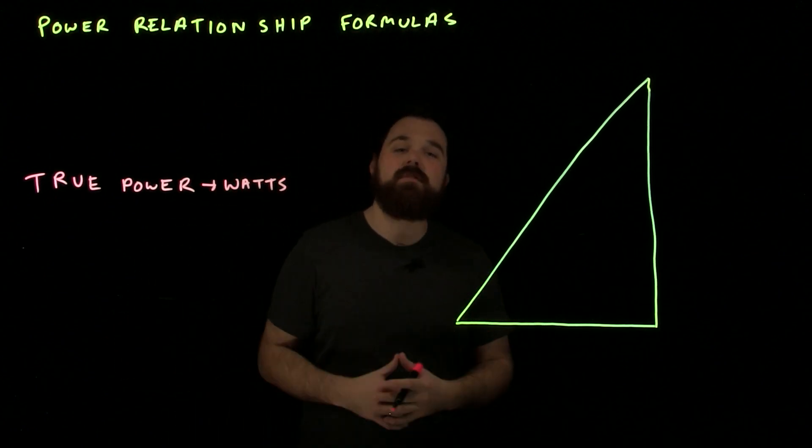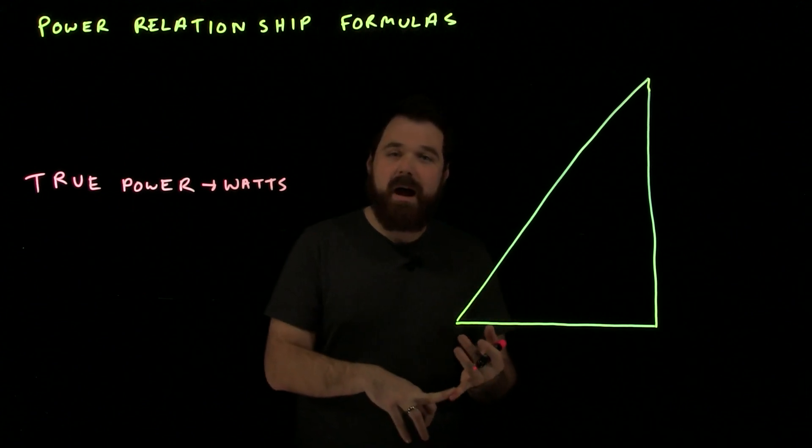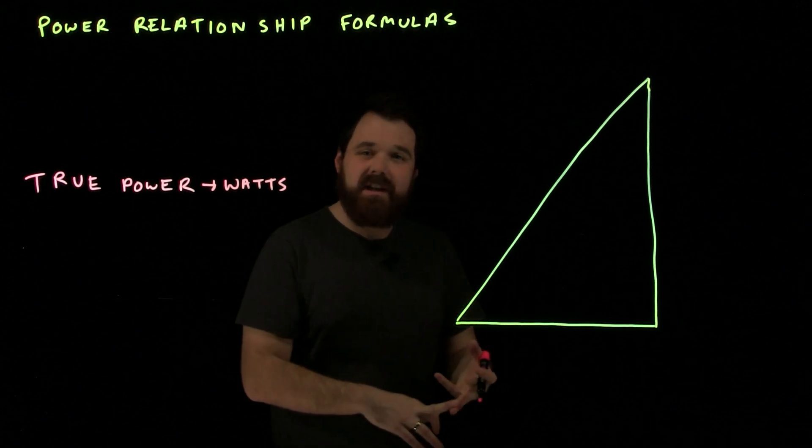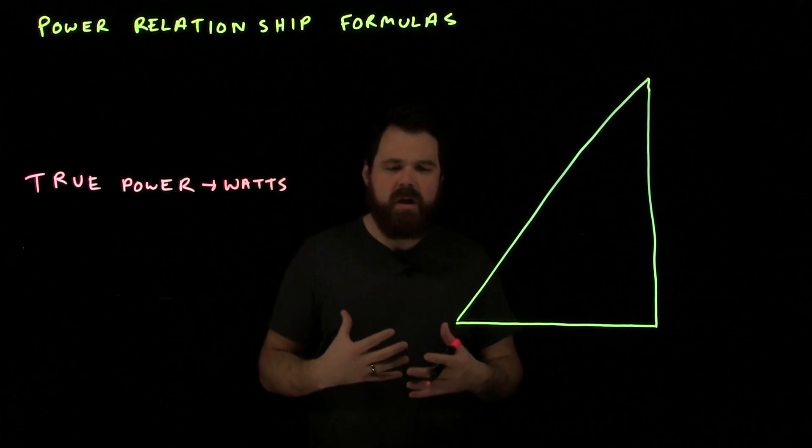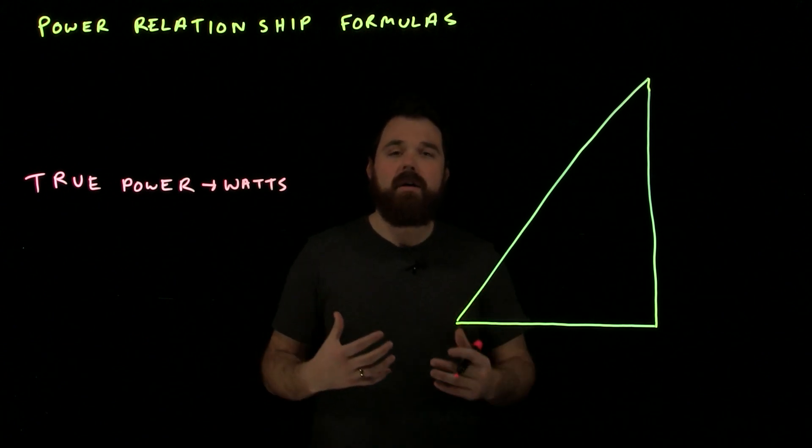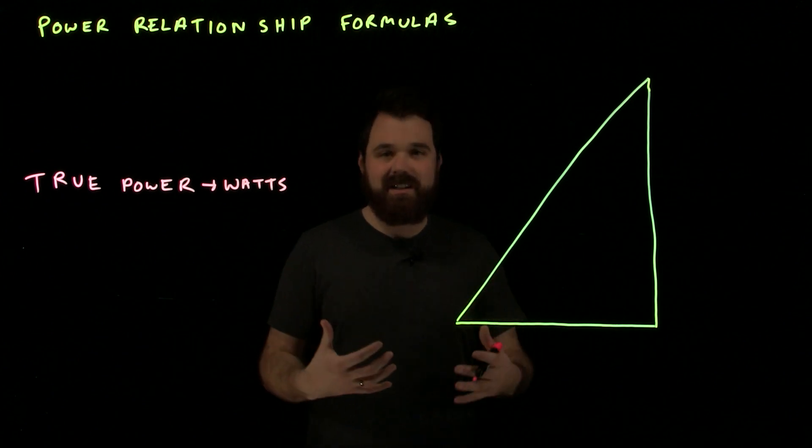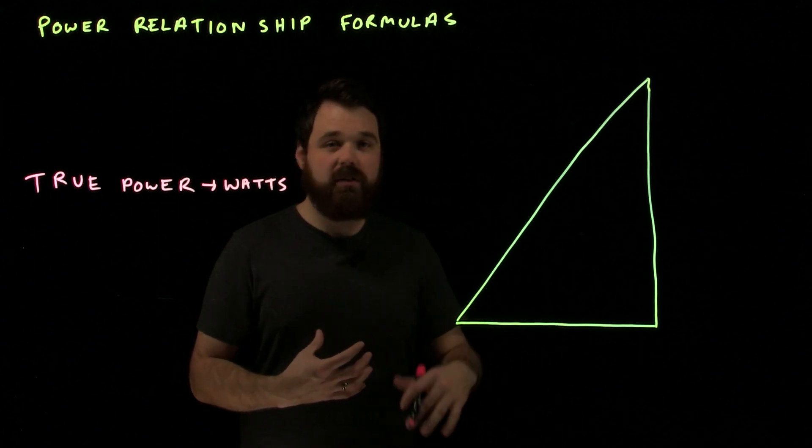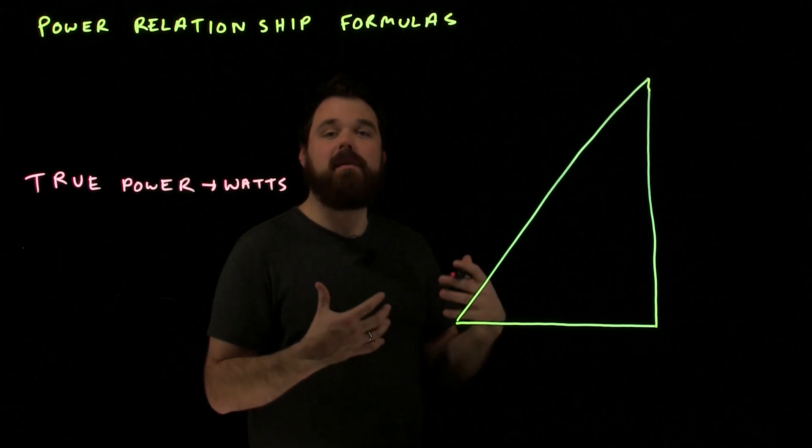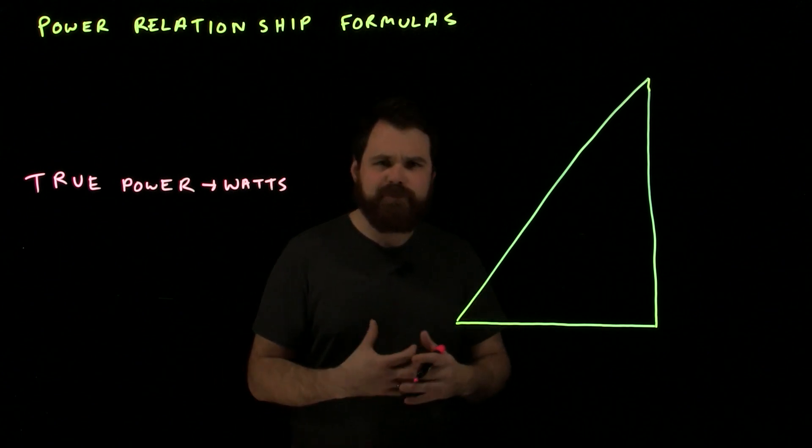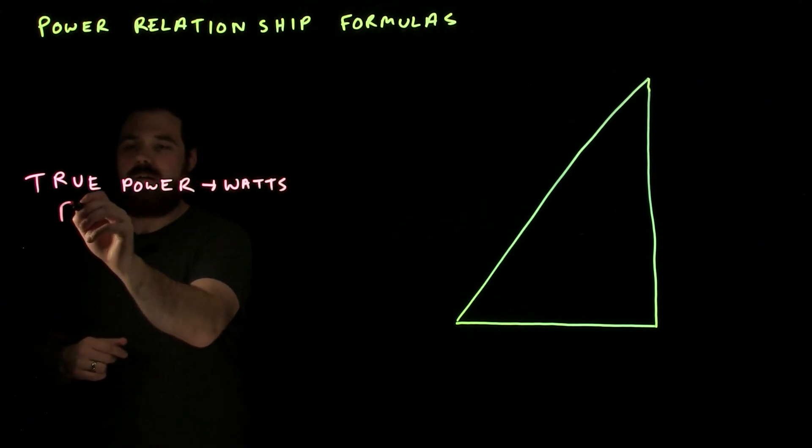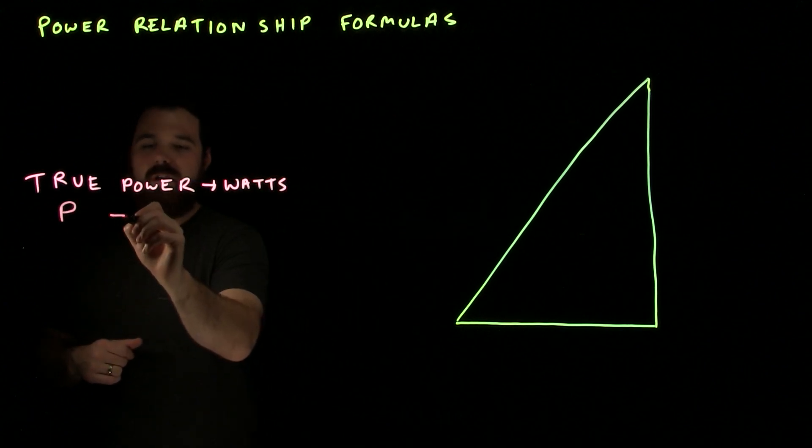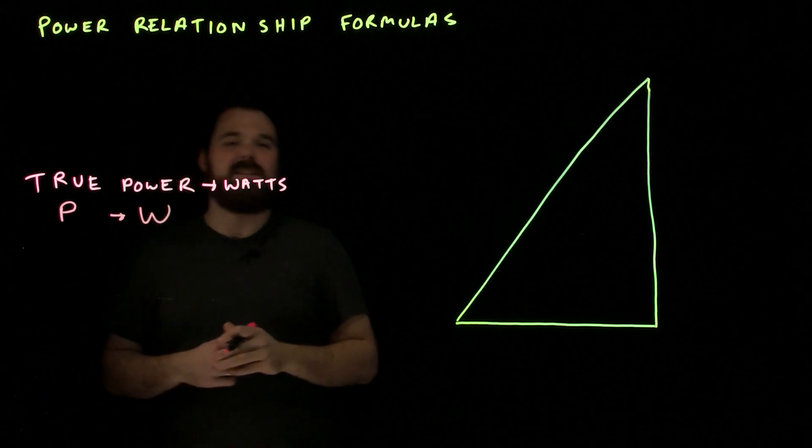It can be known as some other things. We can call it active power, we can call it in-phase power, call it true power, we call it real power. Our true power comes from resistance. Resistance in a circuit and current flowing through it or voltage across it is what provides us with that true power. So, we're going to deal with true power, we're going to call it P, and we're going to say it is measured in watts, which is W.